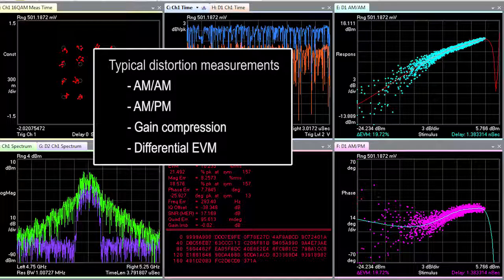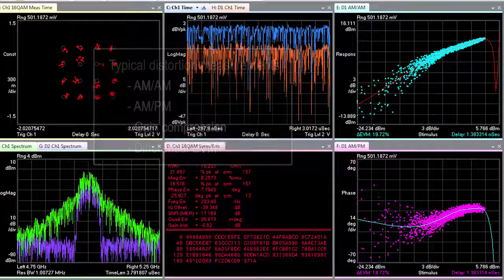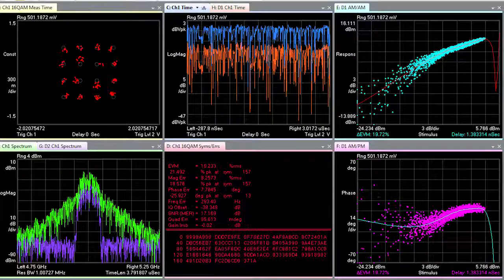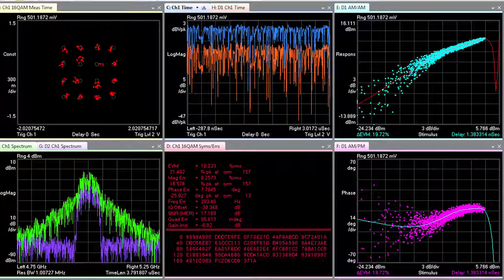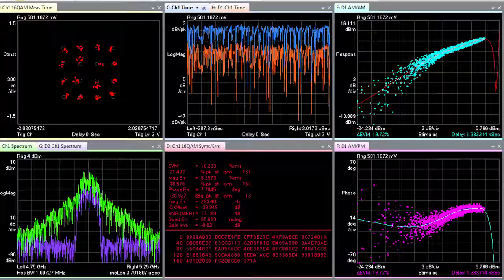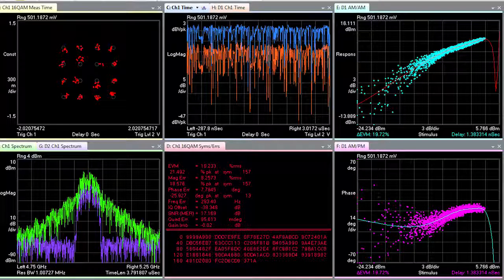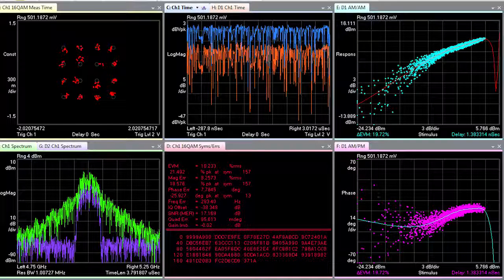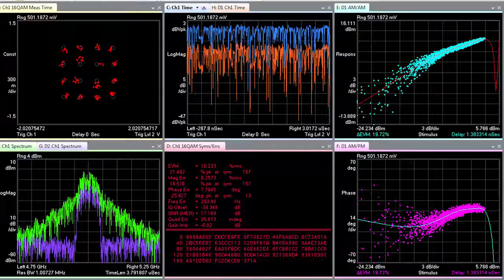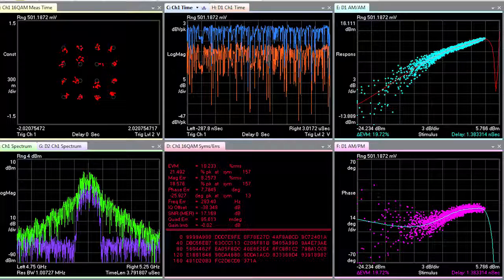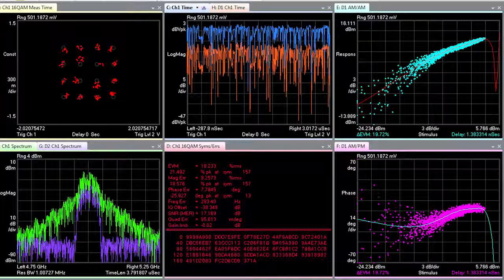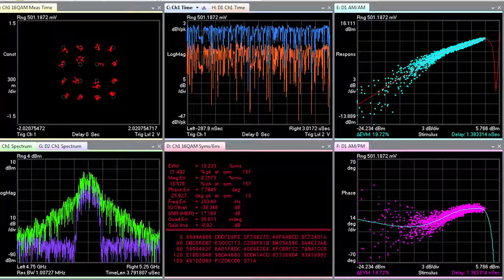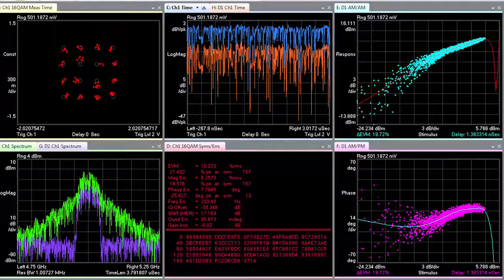Many times these measurements would have been done utilizing two tones as the stimulus and increasing the power to sweep out a curve. But once more of the design decisions have been made, a complex modulated signal similar to what the transponder would use in operation can also be used as a test stimulus. This lets us test with realistic signal dynamics like peak to average power ratio and channel loading of the composite signal.